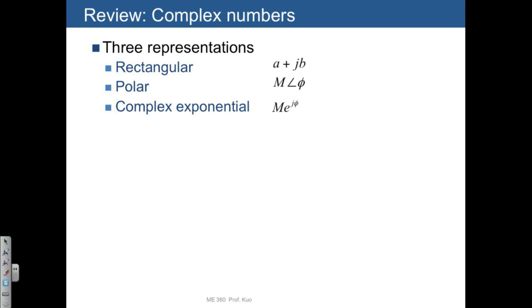The rectangular form just involves writing down the real and imaginary parts A and JB. The polar form is just using polar coordinates to represent the same idea. And then the complex exponential is just another rendering of the polar coordinate form.